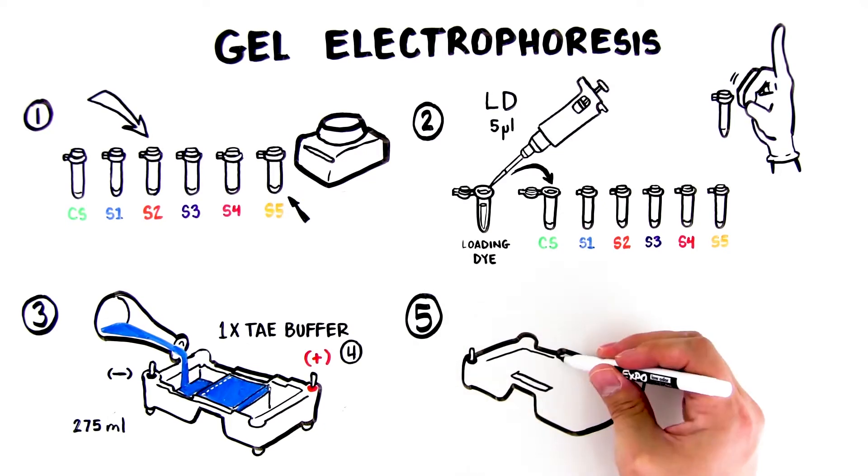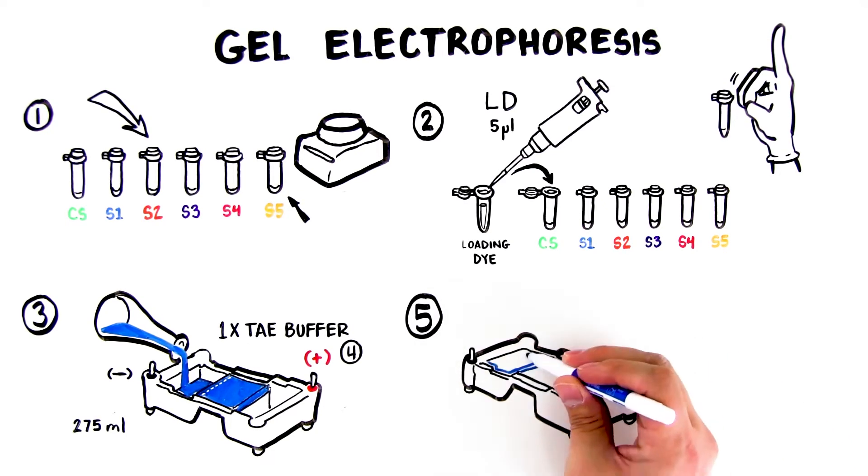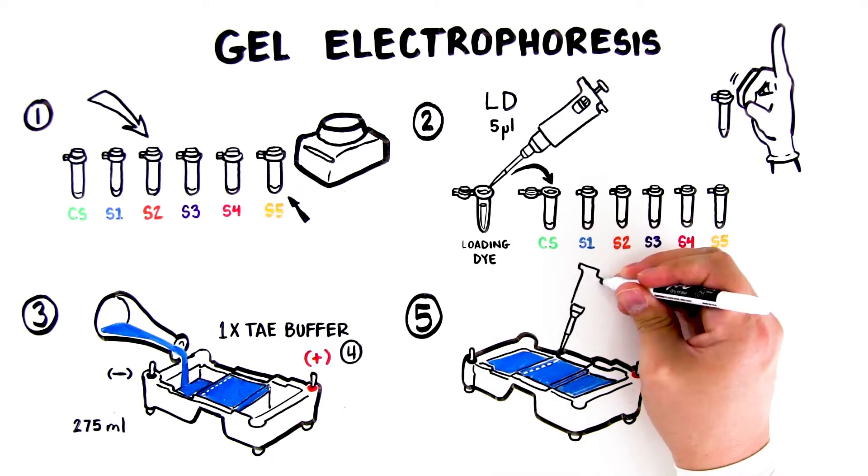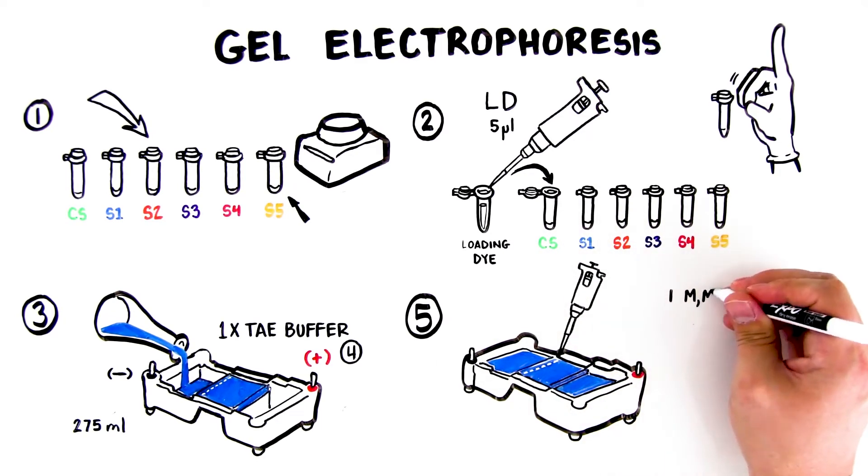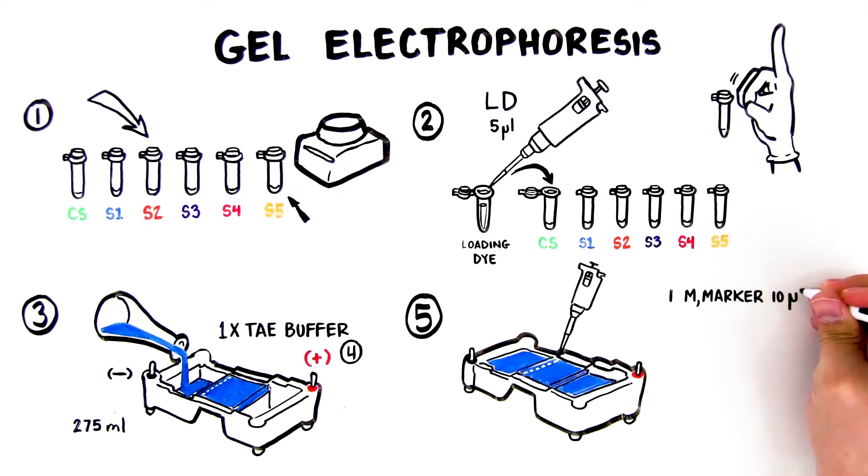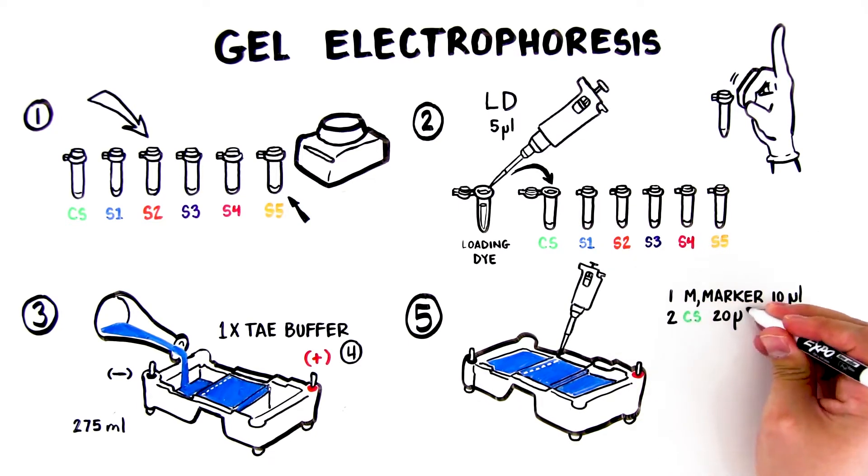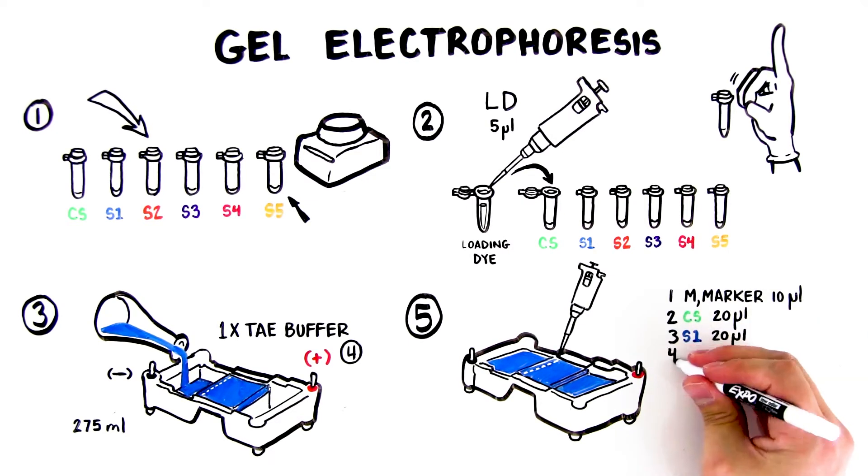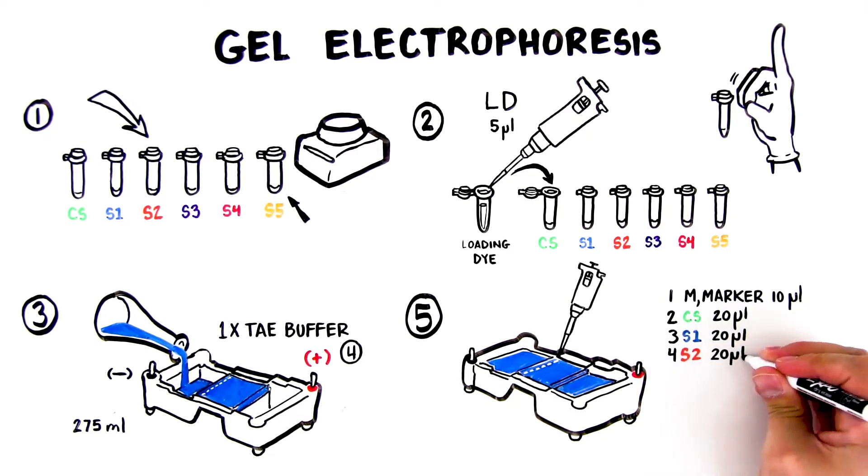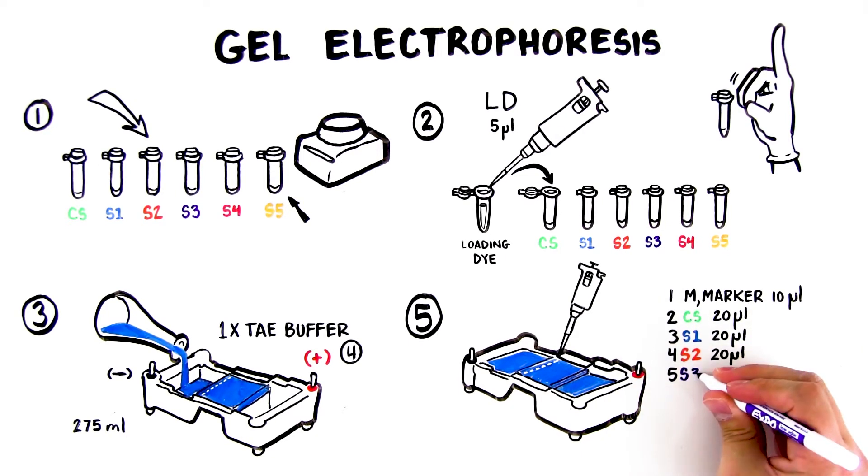Fifth, using a new tip for each sample, load the indicated volume of each sample into 7 wells of the gel in the following order. Lane 1: M, DNA size marker, 10 microliters. Lane 2: CS, Green, 20 microliters. Lane 3: S1, Blue, 20 microliters. Lane 4: S2, Orange, 20 microliters. Lane 5: S3, Violet, 20 microliters. Lane 6: S4, Red, 20 microliters. Lane 7: S5, Yellow, 20 microliters.